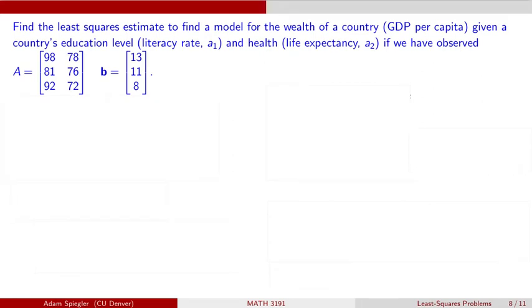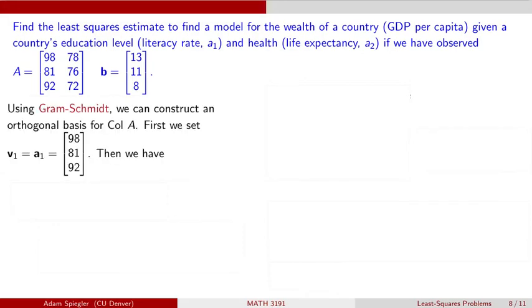Okay, so the model that we were looking at, and we've already solved this, but I want to solve it now using a QR decomposition, was we had the GDP per capita of three different countries. So that was the wealth. And we're trying to come up with a model to predict the wealth as a function of the literacy rate, which is the first column, and life expectancy, which is the second column. So this matrix A has two linearly independent columns. So we can go ahead and try and find orthogonal basis for the column space using the Gram-Schmidt process.